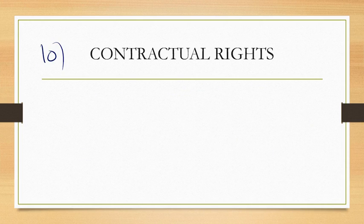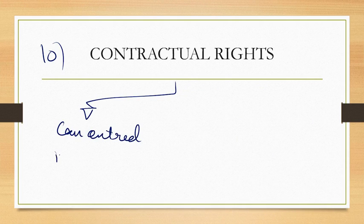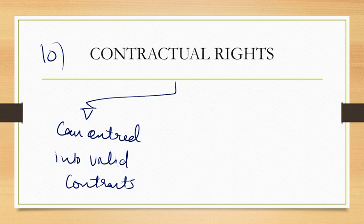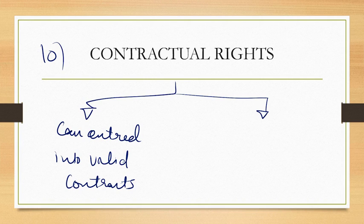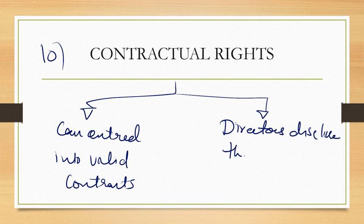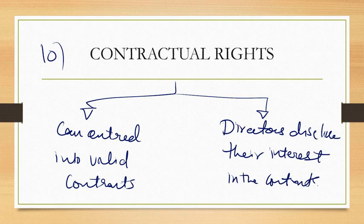The tenth feature is contractual rights. A company can enter into valid contracts as per the Indian Contract Act with individuals, other companies, and the government. A member cannot sue the company in respect of contracts the company has raised. In contracts, directors must disclose their interest — especially if they are getting some personal benefit from the contracts the company is entering into. The company can enter into contracts just like any other normal person.